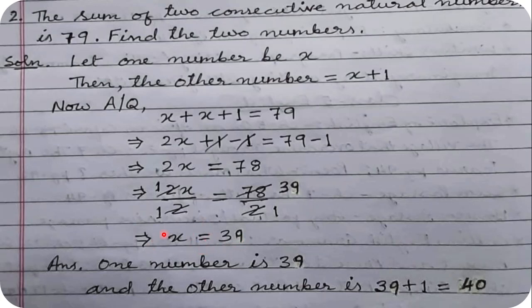So the first number x = 39. The consecutive number was x + 1, so 39 + 1 = 40. The other consecutive natural number is 40.